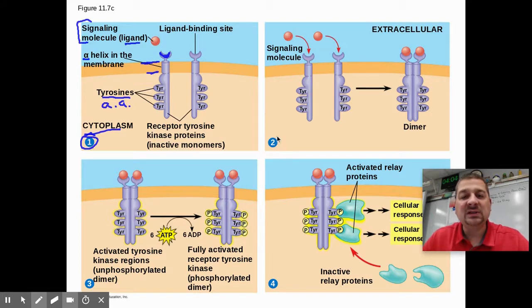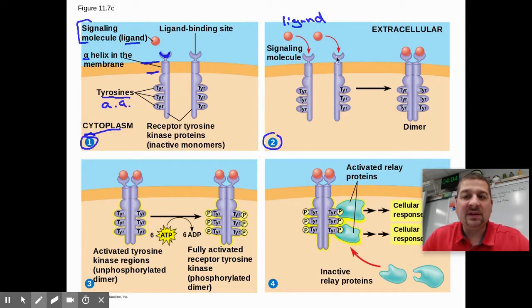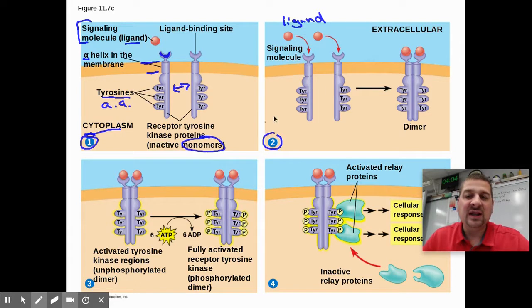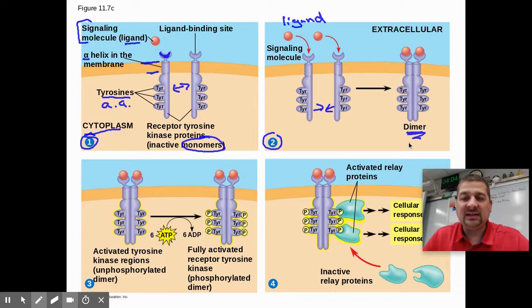In step two, when a signal is released and ligands come in, they bind to the receptors. In step one, these receptors are separated — we call them monomers. When they receive signals, these monomers join together to form what we call a dimer. Now it's activated as a dimer.